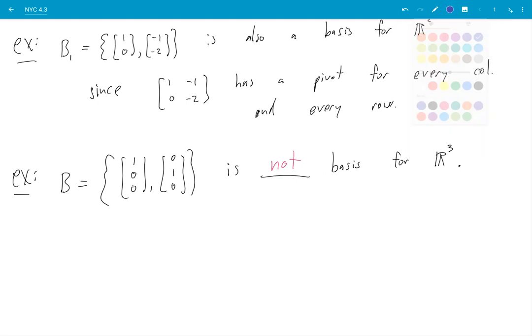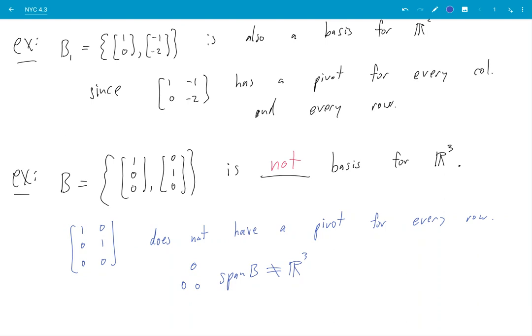So, my reasoning would be sure, these are independent, but they don't span R³. Since this matrix does not have a pivot for every row, therefore, span of B is not equal to all of R³. It is some subset. We say proper subset, meaning it's not the whole thing.